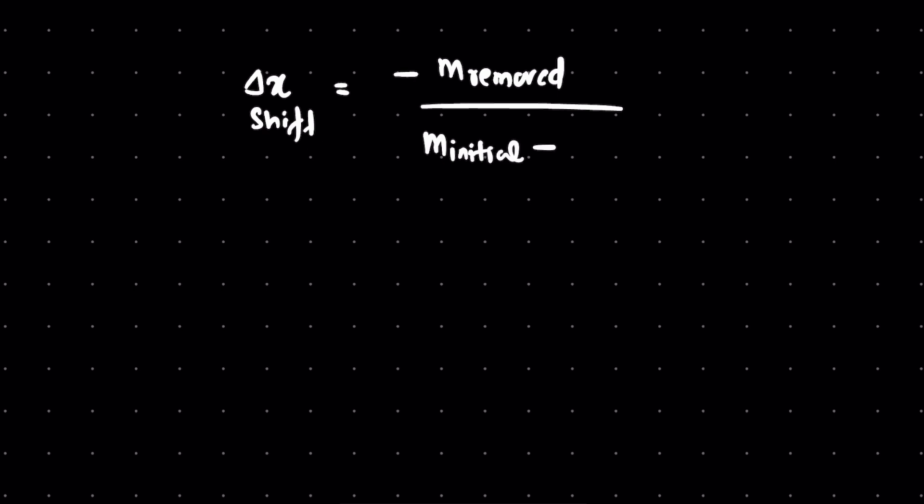So we have the shift equation very clearly. Delta x shift equals minus m removed divided by m initial minus m removed into d, where d is the distance between their centers. For a disk, we can write this as minus r squared divided by R squared minus r squared into d.